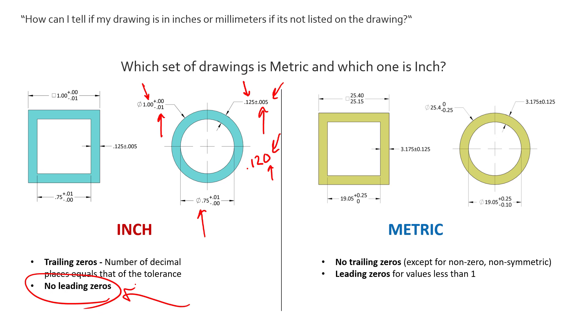And we'll always have the number of decimal places equal to that of the number of decimal places for the tolerance.